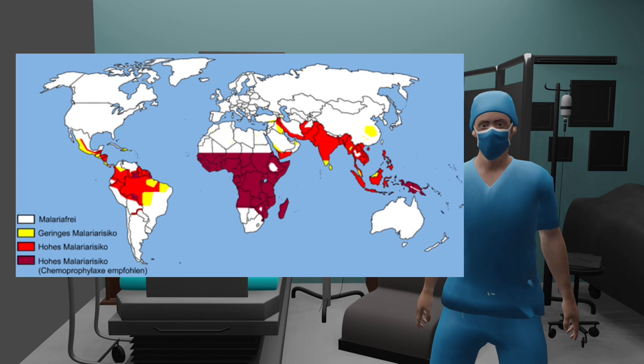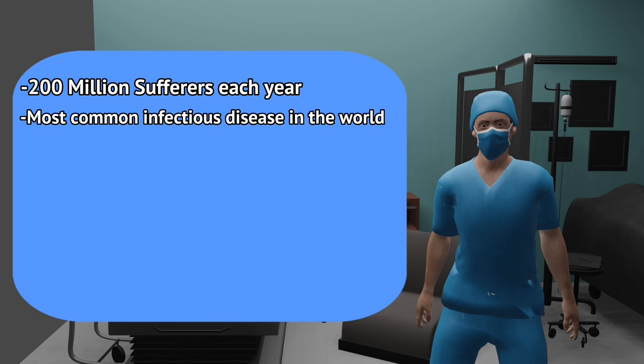Here you can see a picture with all malaria endemic areas. With around 200 million sufferers each year, malaria is the most common infectious disease in the world.